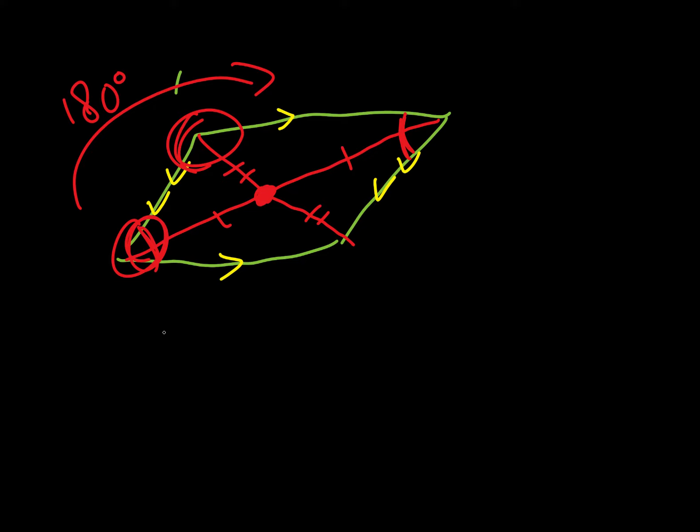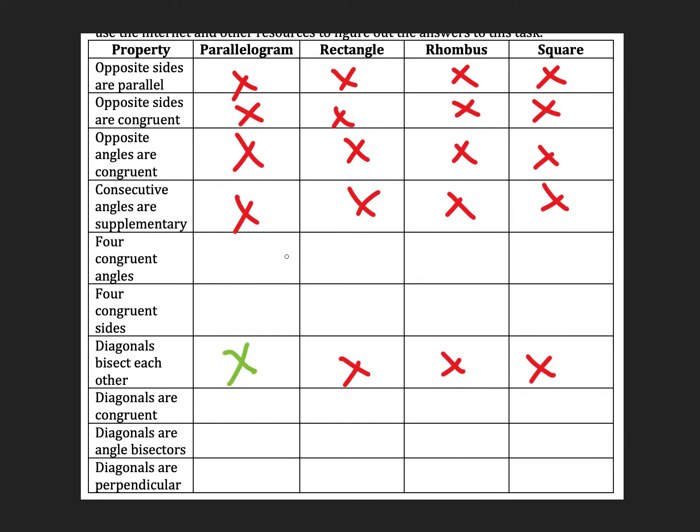So if we're moving on to a rectangle, which most of you should be comfortable with, has four right angles, and then two pairs of opposite sides that are congruent. So we're going to look at this, four congruent angles, that is definitely true for a rectangle, because they're all 90. Four congruent sides, that's not always true, right?